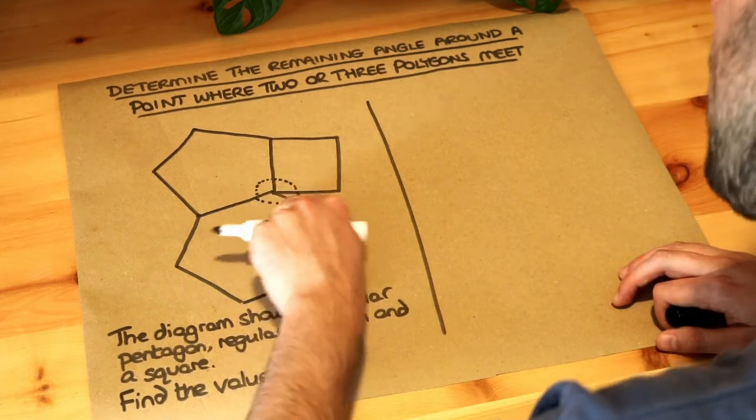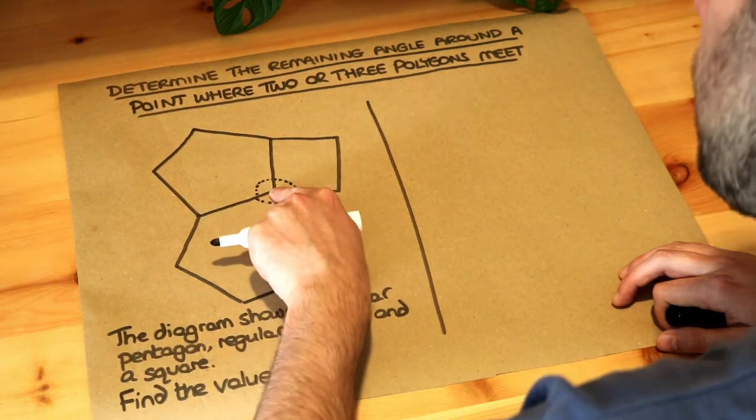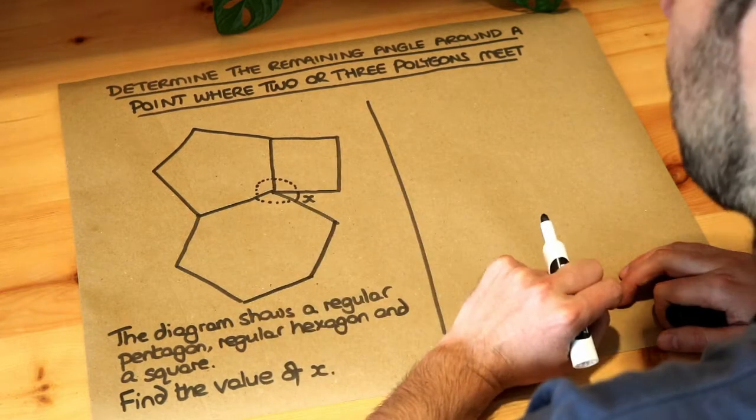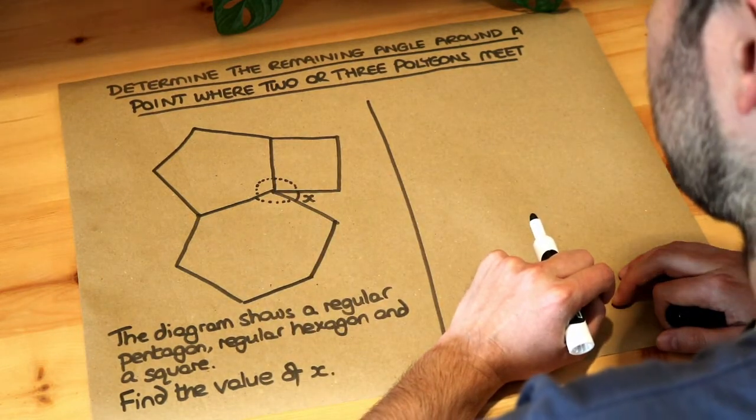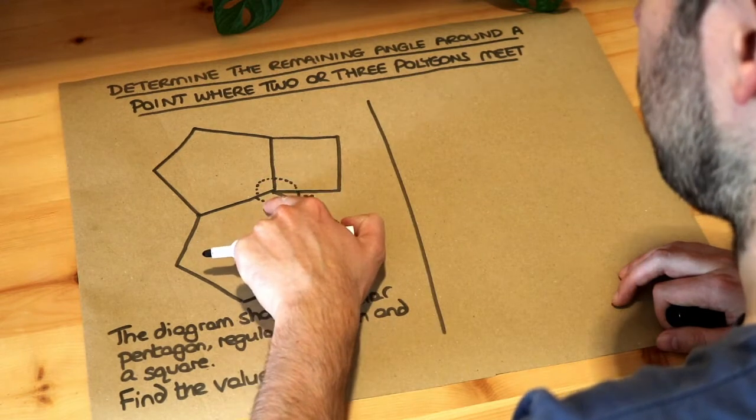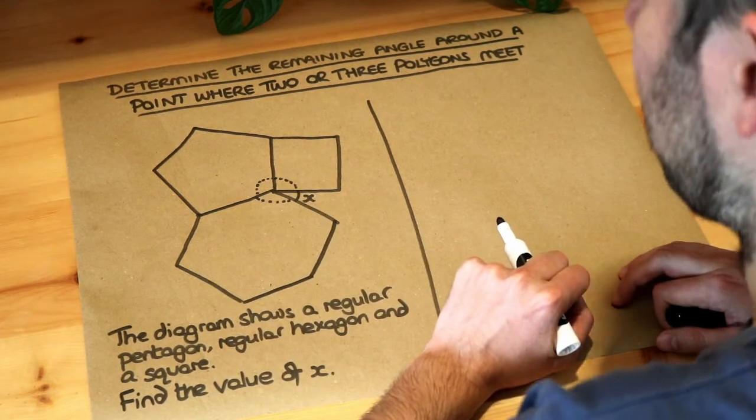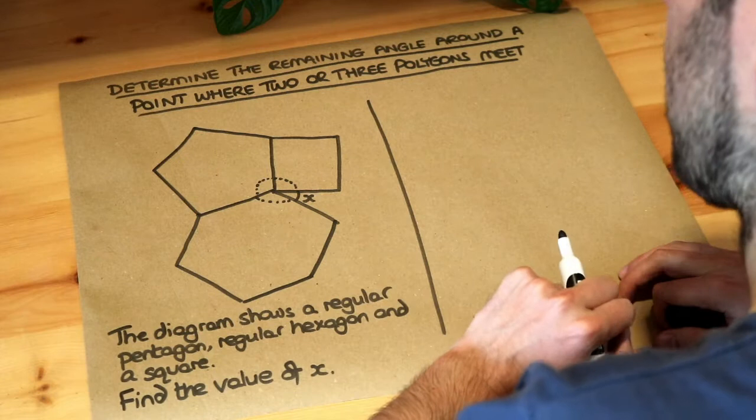Now what do we know about the total angle around any point? Well we know the total angle around a point is 360 degrees. So we could therefore find these three angles and subtract them from 360 degrees to work out x.